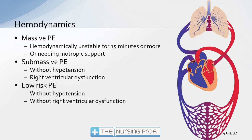The submassive PE is still a fairly large PE because we're getting right ventricular dysfunction — we might see that on an echocardiogram or EKG — but we're not having hypotension, so the left side is managing to maintain cardiac output. Then we have our low risk PE, where the patient does not have hypotension and does not have right ventricular dysfunction. We will be more conservative in treatment when hypotension is not present.